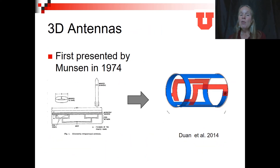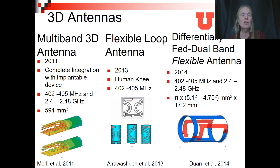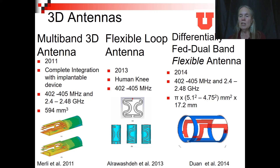Next came three-dimensional antennas. These were first presented in 1974 for aerospace applications, but by 2014 they were readily being seen in implantable applications. The types of 3D antennas were limited only by the size and shape of the device they were attached to. These were generally for endoscopy capsules that could be swallowed, with the goal of complete integration within a small, three-dimensional device. Much of the three-dimensional antenna work was seen in the 2011 through 2015 timeframe.